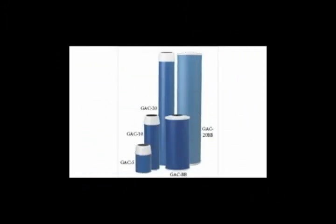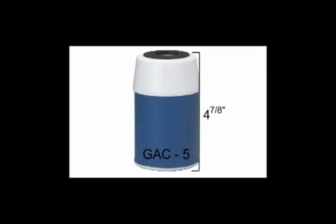GAC series cartridges are available in a variety of sizes and flow rates. The GAC-5 has a height of 4 and 7/8 inches with a diameter of 2 and 7/8 inches and a flow rate of 0.5 gallons per minute for up to 250 gallons. The GAC-5 can be found under the following part number.